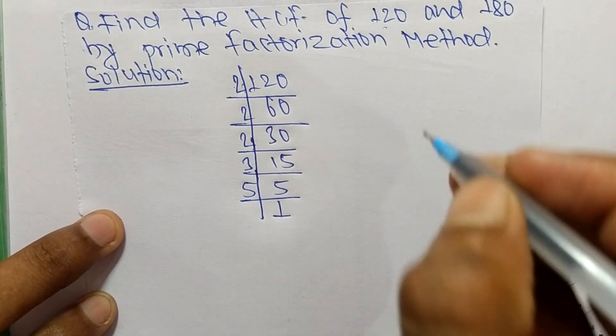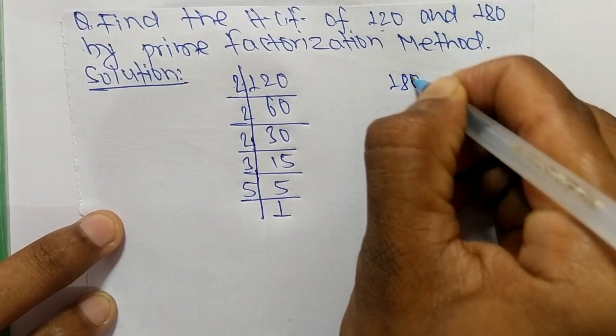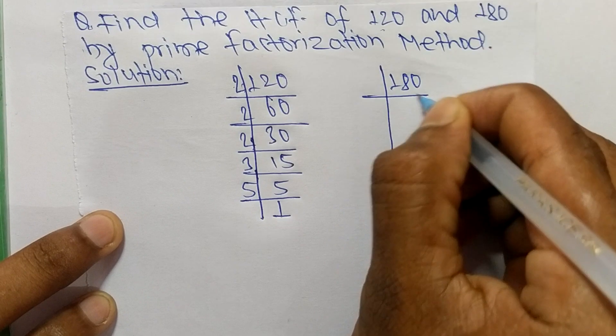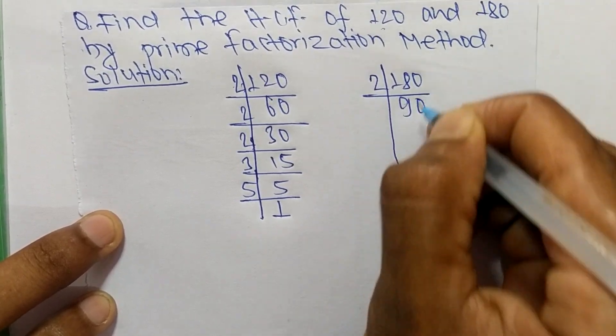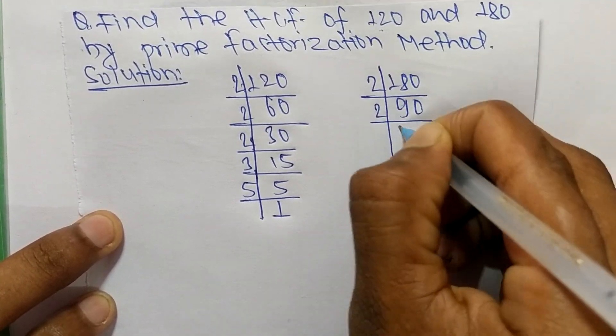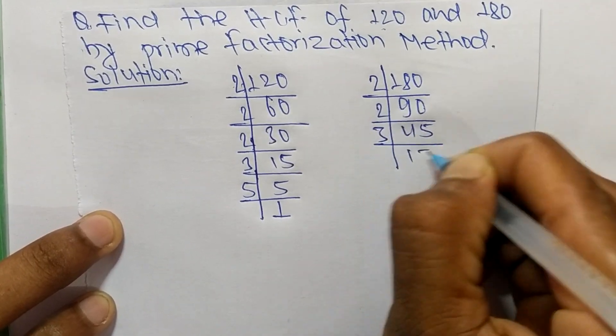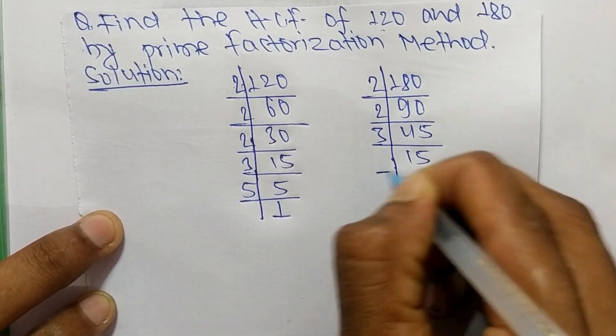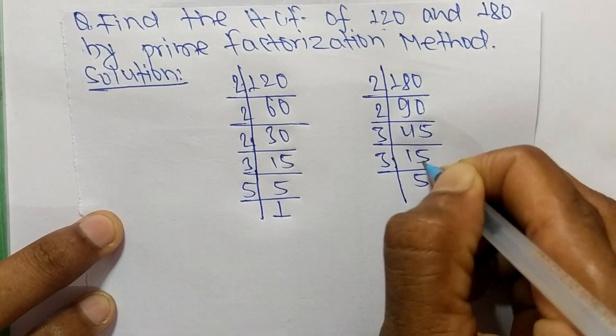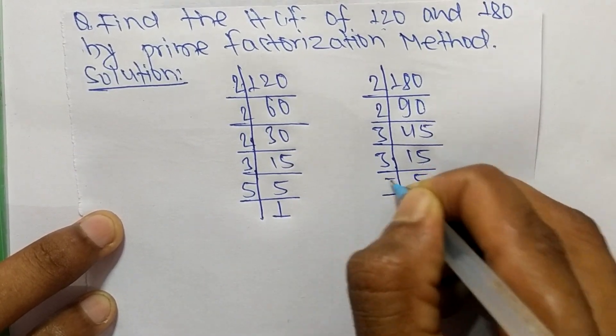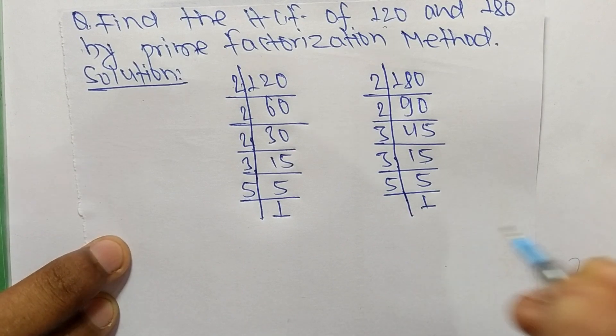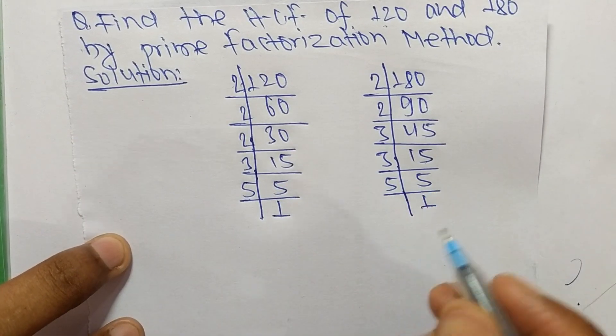Likewise, the prime factors of 180 are: 2 times 90 equals 180, 2 times 45 equals 90, 3 times 15 equals 45, 3 times 5 equals 15, and 5 times 1 equals 5.